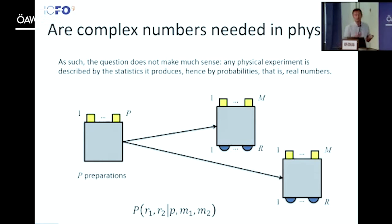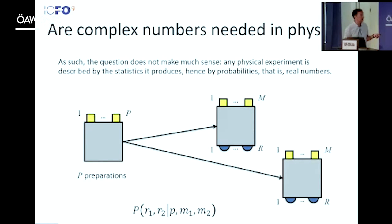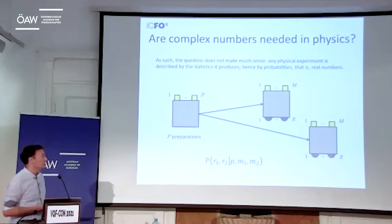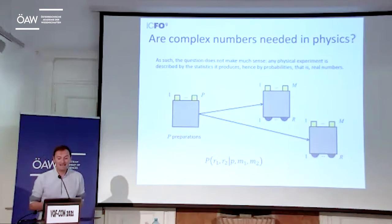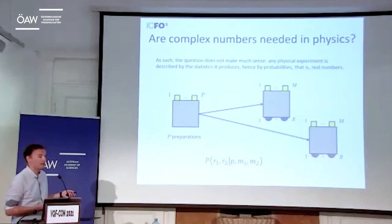We represent these by boxes. You have different preparations labeled by an index from one to P possible preparations. Then you perform some actions that you can see as measurements, and as a result you observe a result labeled from one to R. You repeat this experiment, count frequencies, and collect everything into probabilities of getting a given result when you prepared something and made the measurement. If what you want is to describe what's going on in the experiment, you don't need complex numbers because you use real numbers to define probabilities.